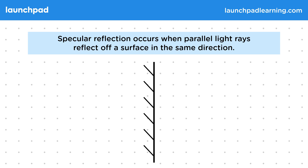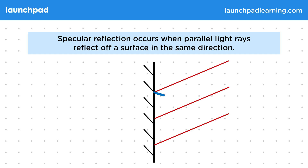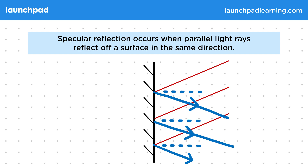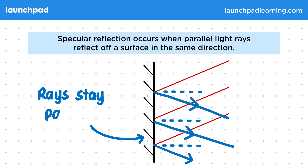Here's an example of a specular surface, as indicated by these diagonal lines. Mirrors and polished metals are examples of specular surfaces. They are perfectly flat, unlike the diffuse surface. When we direct parallel rays at the surface, they all reflect in the same direction, meaning specular reflection is occurring. This happens because since the surface is perfectly flat, the normal will be the same everywhere, which is what allows the rays to stay parallel.